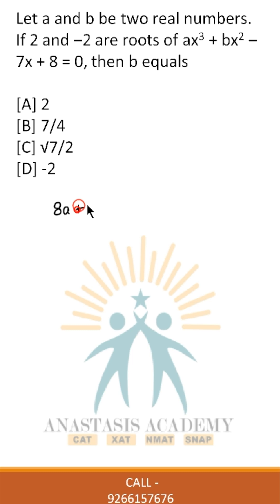So 8a + 4b - 14 + 8 = 0, or 8a + 4b = 6, or 4a + 2b = 3. This is the first equation.